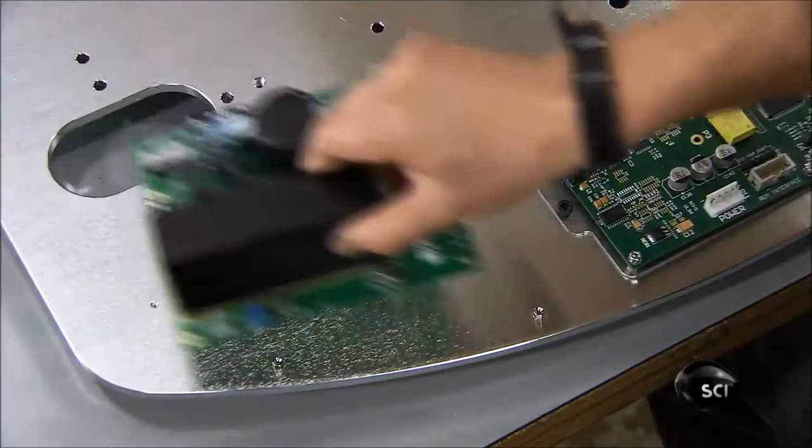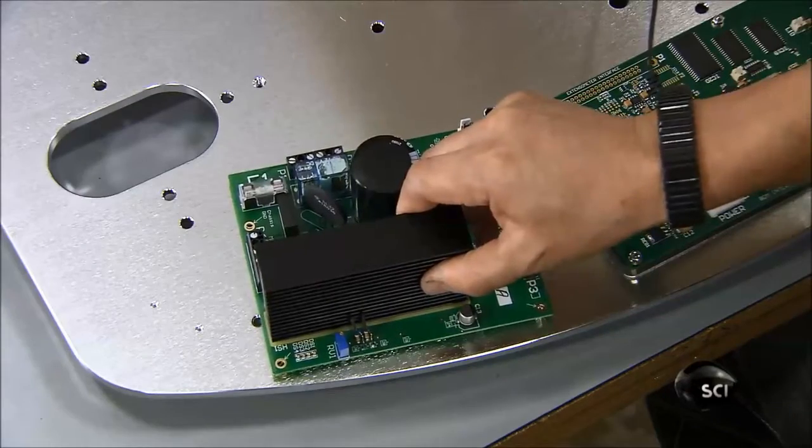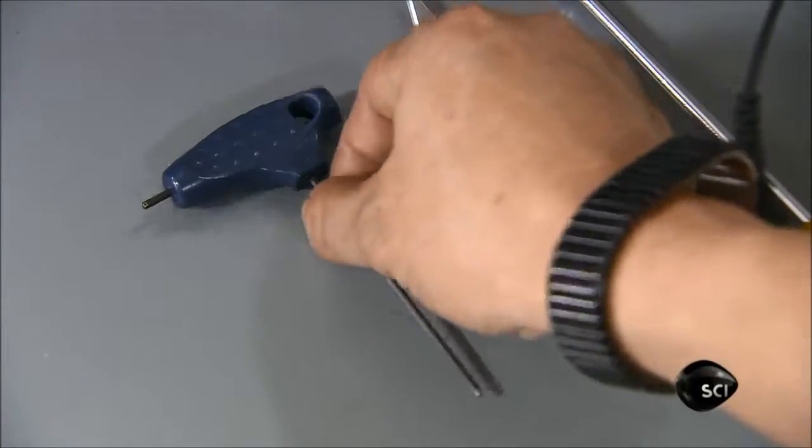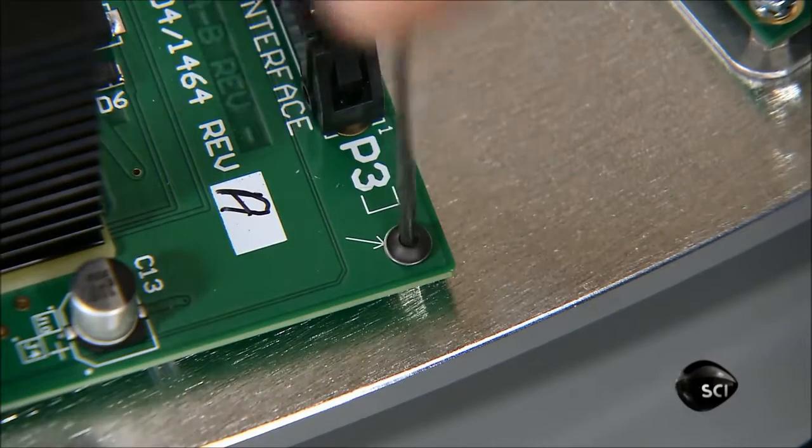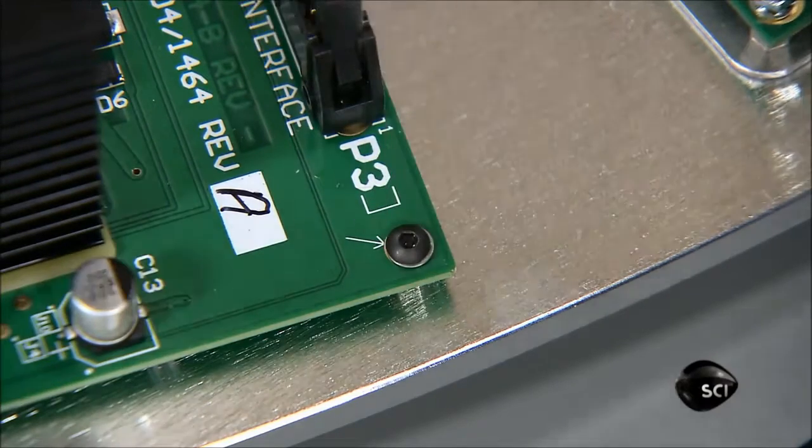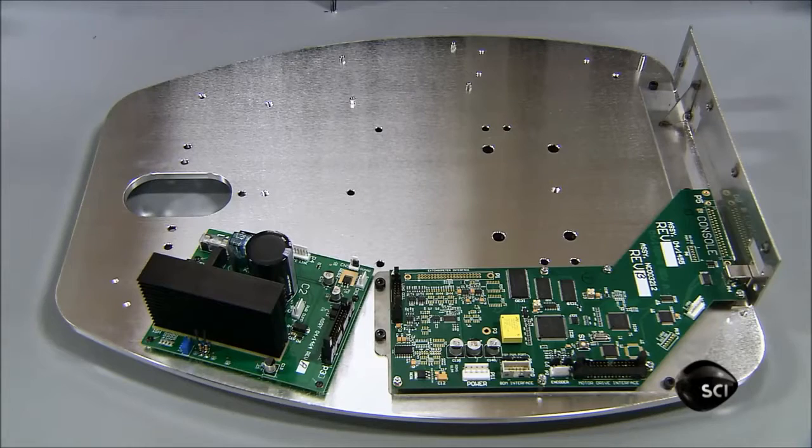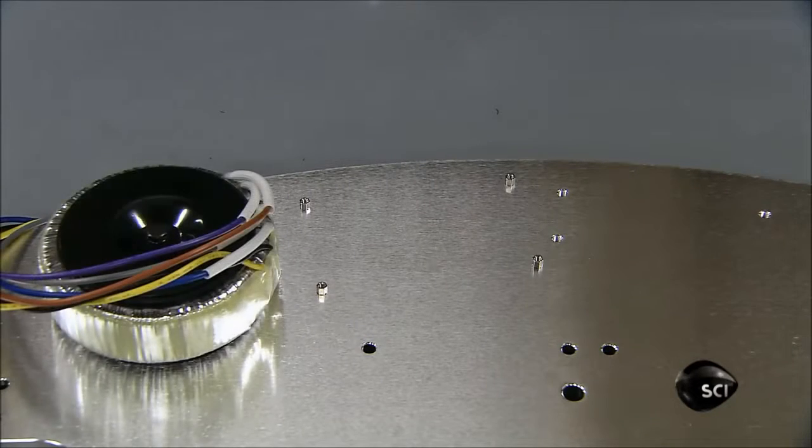Throughout the assembly, the technician wears an electrostatic discharge band on his wrist. This arrests static electricity to prevent damage to the parts. He screws the motor drive board to the force tester base and moves on to the next parts.